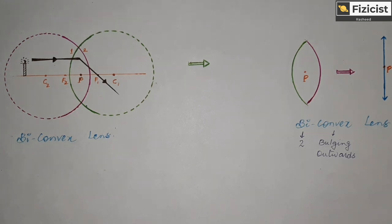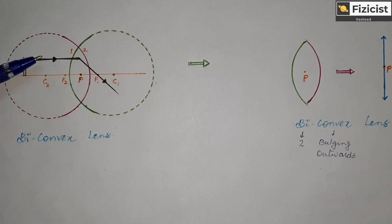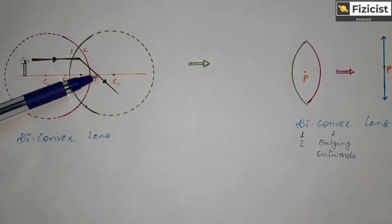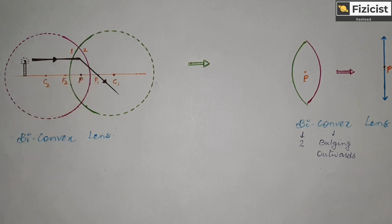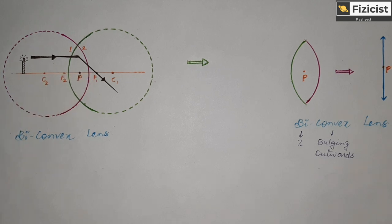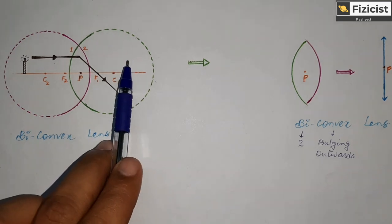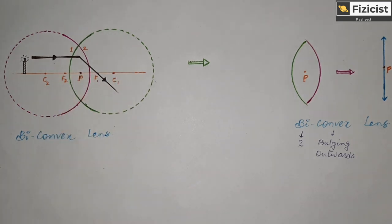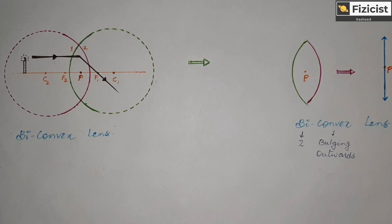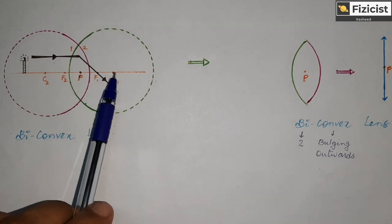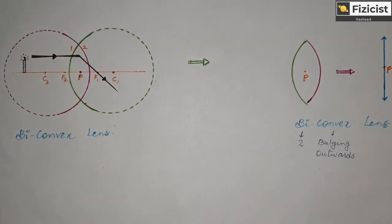If I keep an object at infinite distance from the lens, the light rays coming are parallel to the principal axis. The light ray travels, strikes the lens, gets refracted, and passes through the focal point. So if I keep the object on the left side, the focal point is formed on the right side. In this way, for a biconvex lens we have two centers of curvature and two focal points.